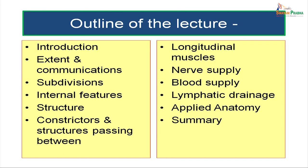Today's topic — the pharynx — will be covered under the following headings: a brief introduction, extent and communications, subdivisions, internal features of different subdivisions, the structure of the pharynx including the muscular coat with constrictors and longitudinal muscles, nerve supply, blood supply, lymphatic drainage, applied anatomy, and a summary.